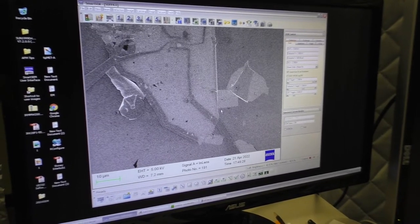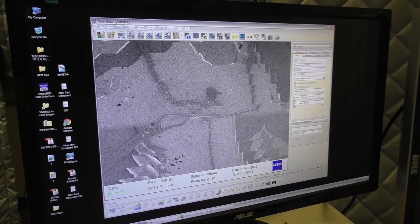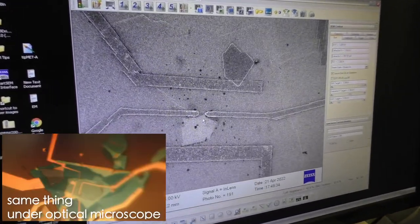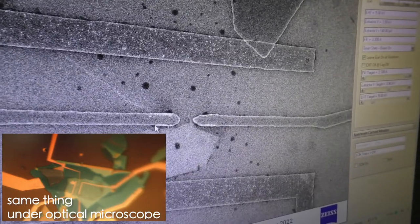We can change the magnification, which is done by changing the area scanned by the electron beam. If we scan a smaller area with our fixed beam width, we get a higher magnification.